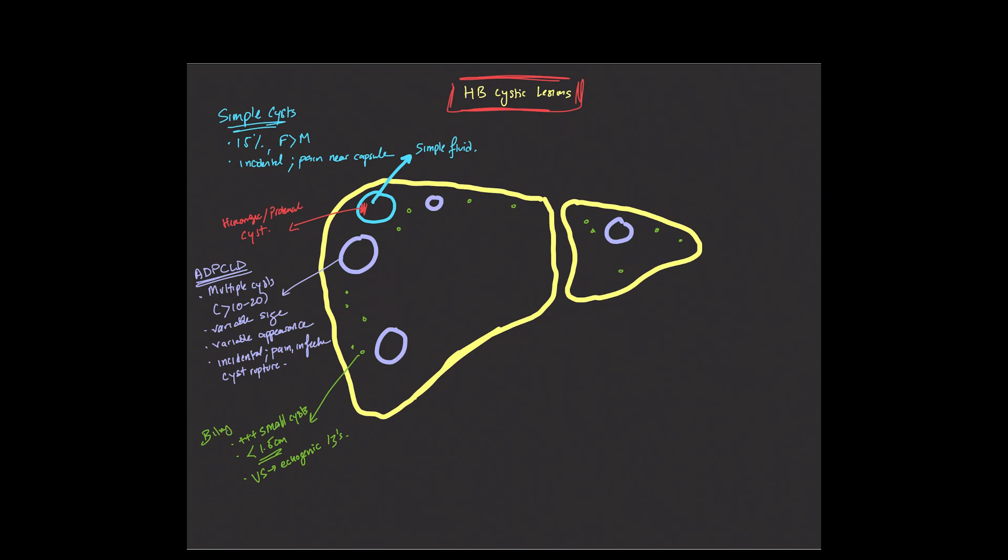One of the entities that you'll think about is biliary hamartomas. And these are also known as von Meyenburg complexes. It's just something to sort of keep in the back of your mind when you see this. These are often incidental. We often don't see them as well in CT, but can be picked up on ultrasound and in particular on MR on T2-weighted sequences. It's a benign thing. You don't really need to do anything about it.